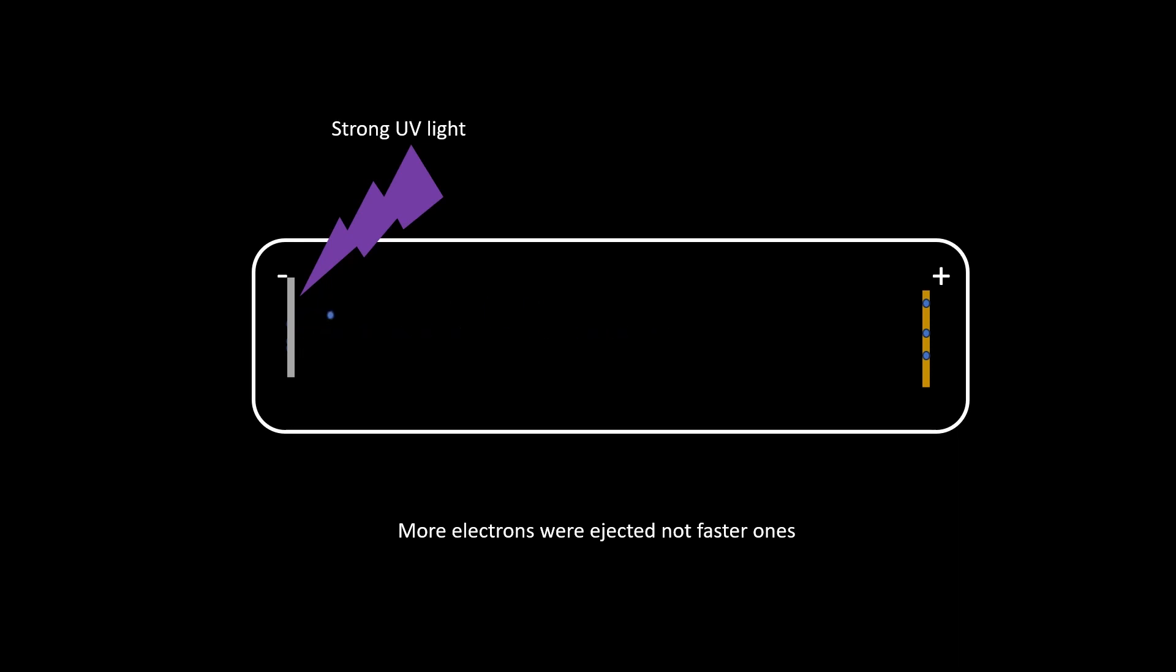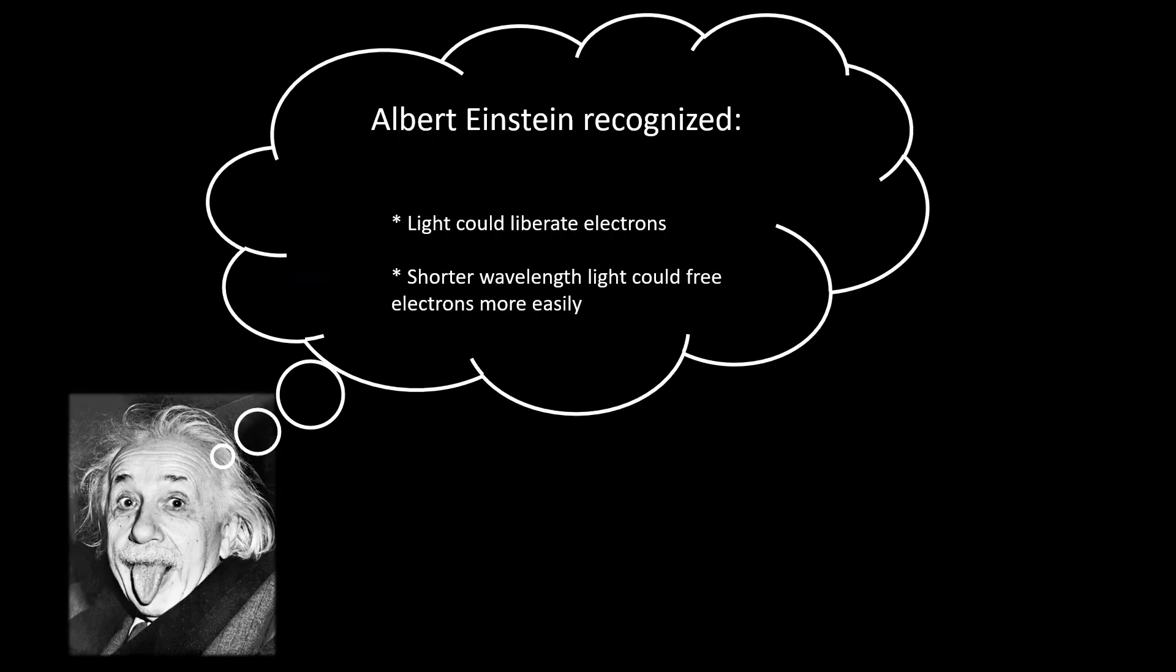However, just like the puzzle of blackbody radiation, the experimental results didn't match these expectations. Instead of fast electrons being ejected, just more of the slower electrons were observed to be ejected. It was only when Albert Einstein stepped into the picture to interpret all these observations that everything started to make sense.